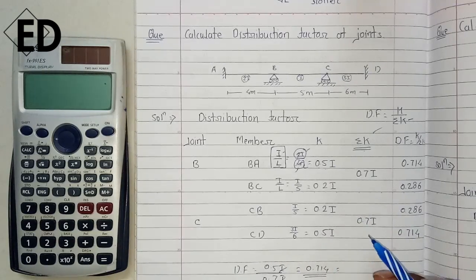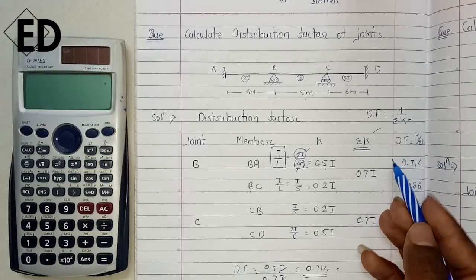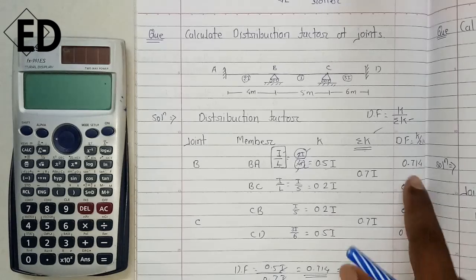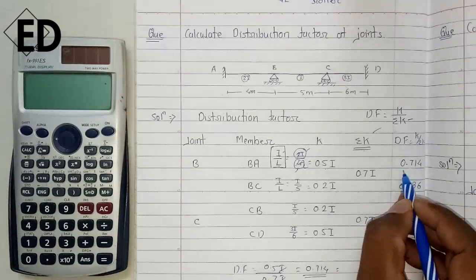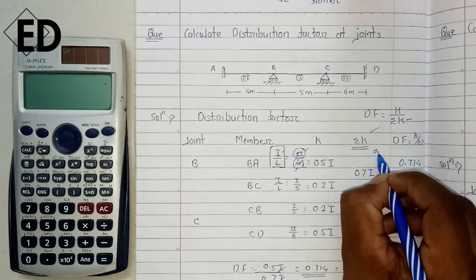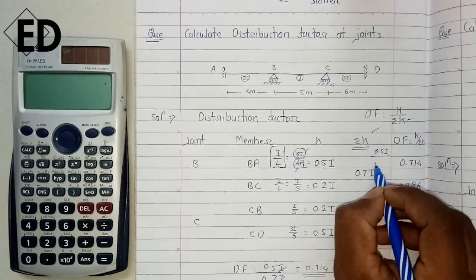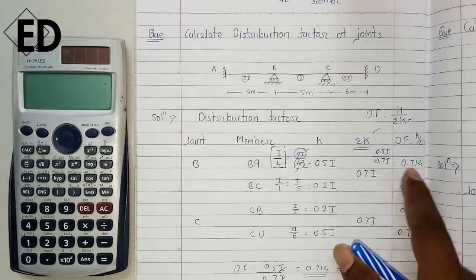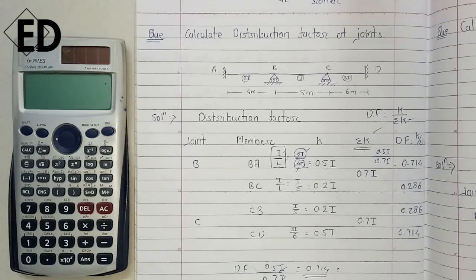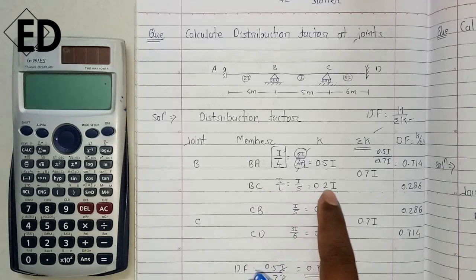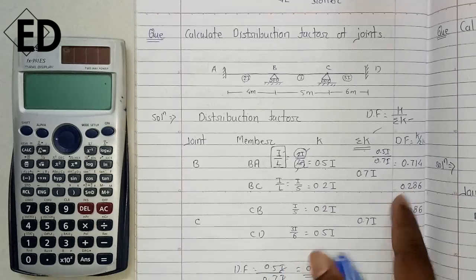The distribution factor is the ratio of rotational stiffness to the sum of rotational stiffness at the joint. For beam BA, the distribution factor is 0.5I divided by 0.7I, which gives us 0.714. This is the distribution factor for beam BA.